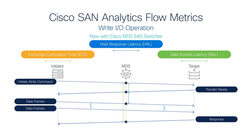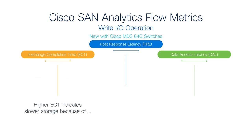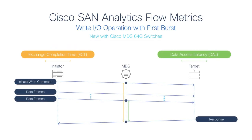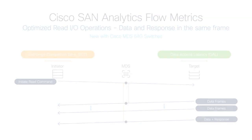In addition, the 64-gigabit MDS switches collect the Host Response Latency (HRL), which is the time taken by the host to send data after receiving the transfer ready. Using ECT, DAL, and HRL together, you can quickly and accurately pinpoint the exact root cause of slow I/O response. For example, if ECT increases and DAL also increases, the storage array is the root cause. However, if HRL increases, then the host is the root cause.